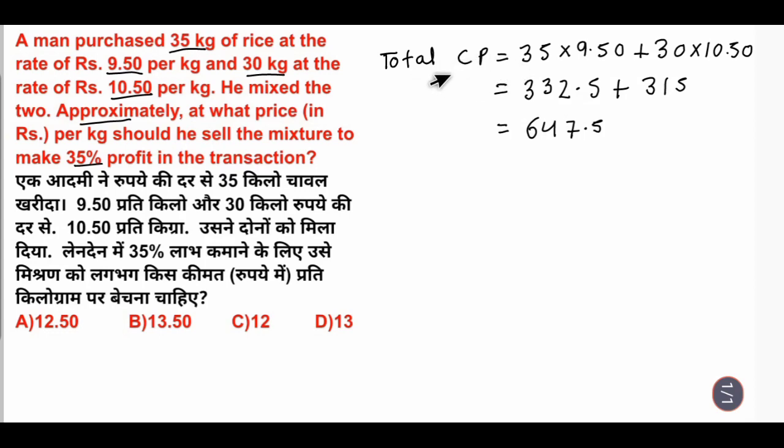Now we are talking about total CP. 35 kg and 30 kg which means 65 kg. For 65 kg, we need 35% profit, which means 135% of CP.